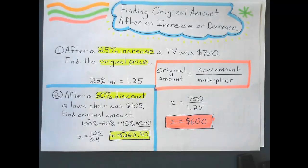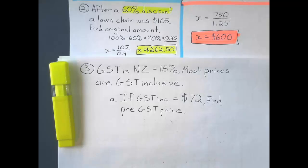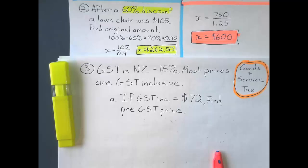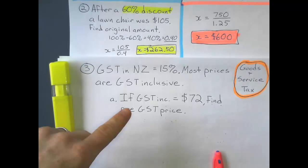Finally, taxes. GST in New Zealand. GST stands for Goods and Service Tax. Most things we buy in New Zealand are going to be GST inclusive. And what that means is that the tax is already included in the price.